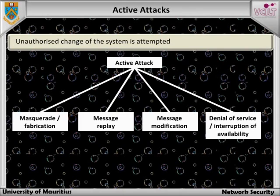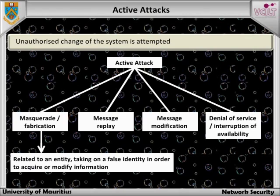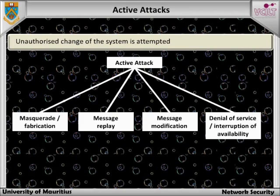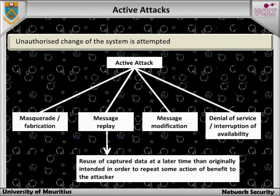The figure shows four subcategories. Masquerade attacks, as the name suggests, relate to an entity — usually a computer or a person — taking on a false identity in order to acquire or modify information, and in effect achieve an unwarranted privilege status. Message replay involves the reuse of captured data at a later time than originally intended, in order to repeat some action of benefit to the attacker.